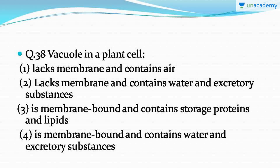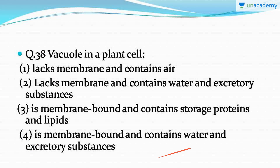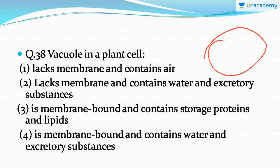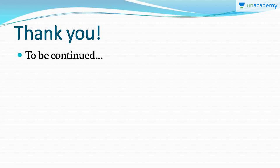The last question asks which description correctly describes the vacuole in a plant cell. The correct answer is option number four: the vacuole is a membrane-bound structure that contains water as well as excretory substances. The membrane of the vacuole is called the tonoplast and it is a single-layered membrane. The vacuole stores excretory substances and slowly excretes them out of the cell when they are no longer useful. This is where the tutorial ends — keep working hard, good luck!